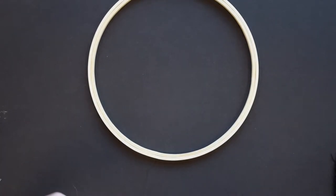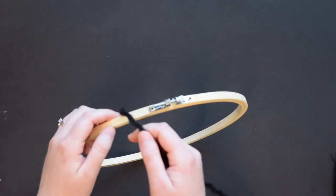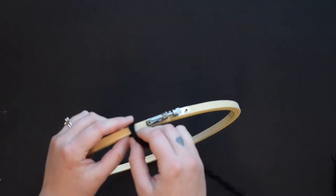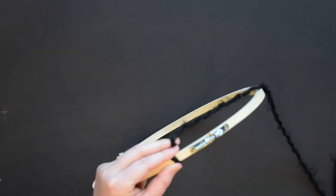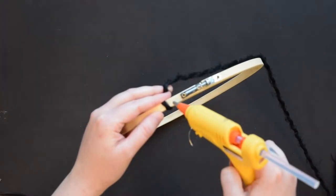We're going to wrap and add a spot of glue on top of our embroidery hoop.